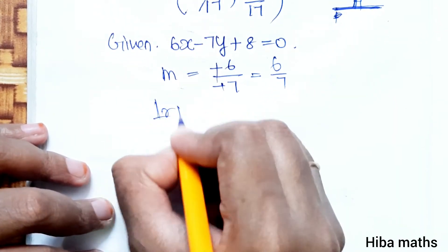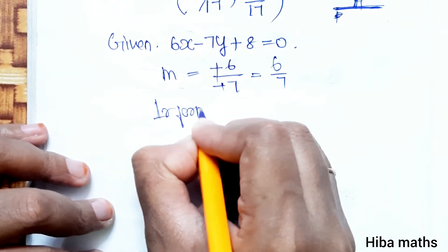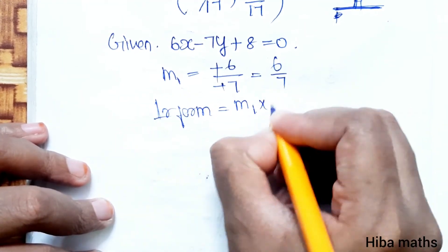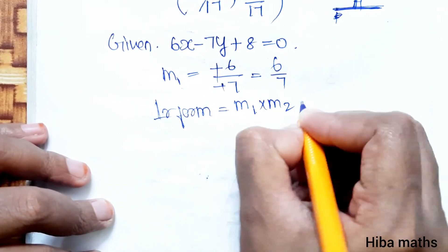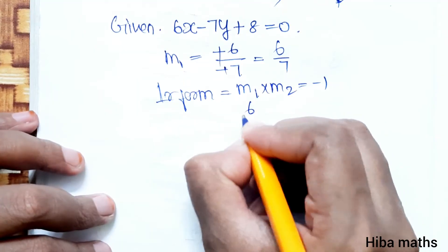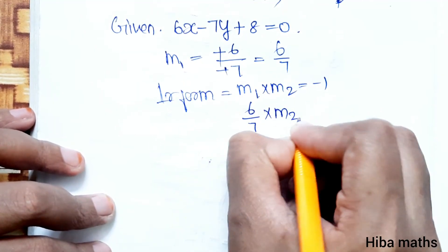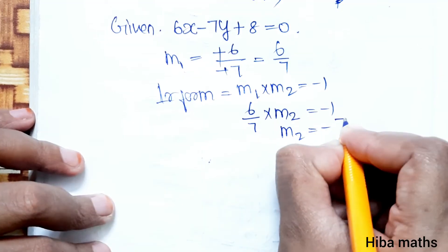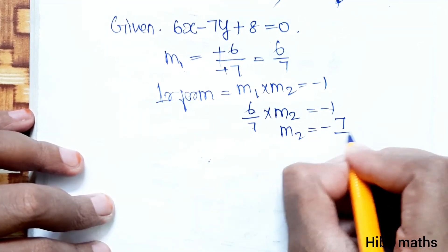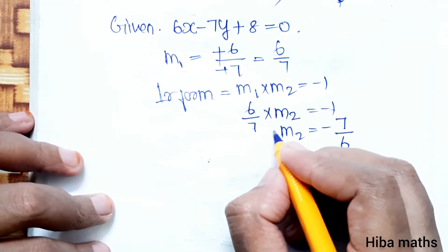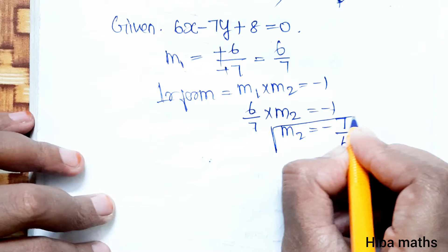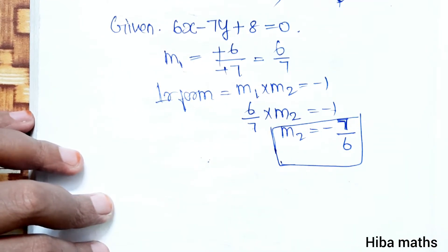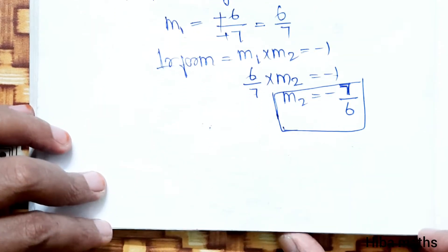Since the required path is perpendicular to this line, we use M1 times M2 equal to minus 1. M1 is 6 by 7, so M2 equal to minus 1 divided by 6 by 7, which gives M2 equal to minus 7 by 6. This is the slope of the required path.